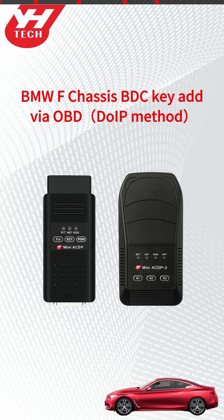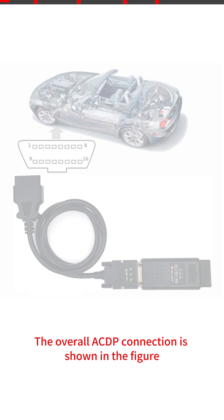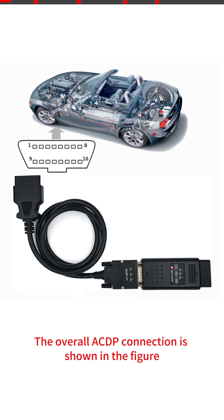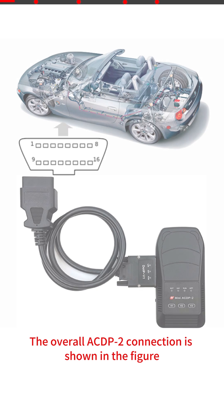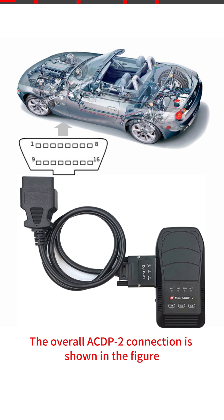This video shows how to add a BMW F-Chassis BDC key via DOIP OBD method. The overall ACDP connection is shown in the figure. The overall ACDP 2 connection is shown in the figure.